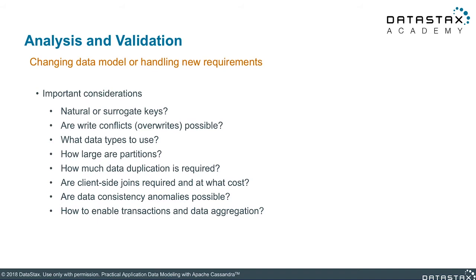Data integrity should always be a priority when handling data, and having a good primary key is necessary to avoid upserts in DataStax Enterprise. Since that is covered with our mapping rules, we don't need to worry about that here. However, there are other scenarios where we do need to consider the possibility of write conflicts, primarily with race conditions. The most common type of race condition is when doing a read before a write, where the written data is dependent on what was read.